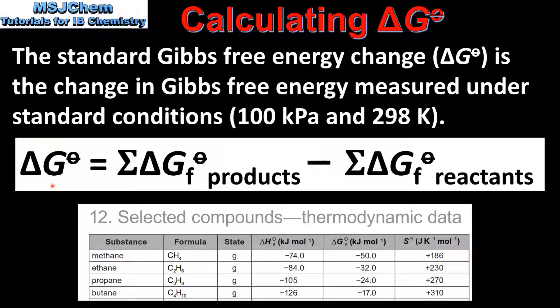So the standard Gibbs free energy change for a reaction is equal to the sum of the standard Gibbs free energy of formation values of the products minus the sum of the standard Gibbs free energy of formation values of the reactants.